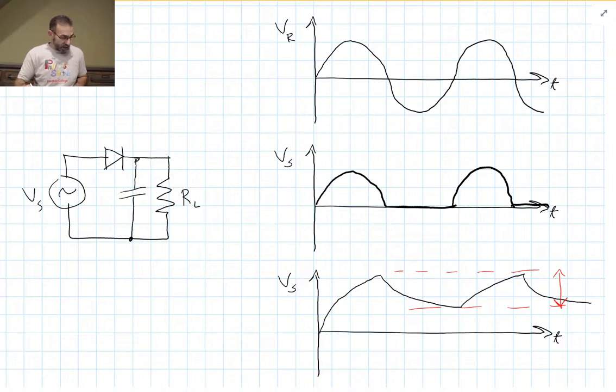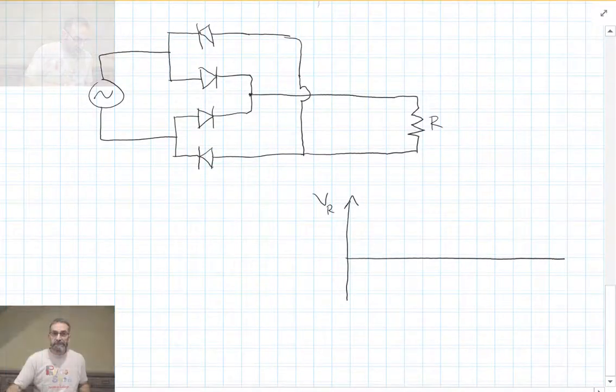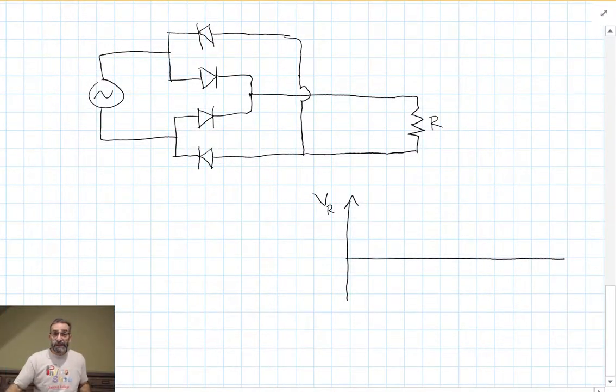Of course, setting it up like this is not very efficient because we're losing half of the signal provided from our source. It would be much better if we used four diodes instead of one. Most of these devices work like this. If you set up four diodes like this...